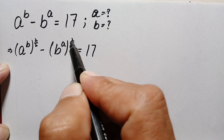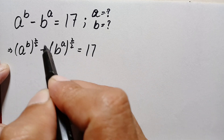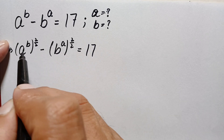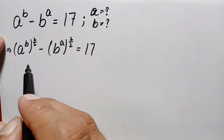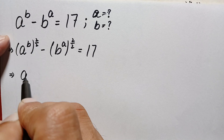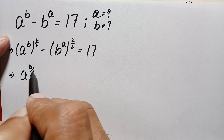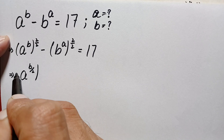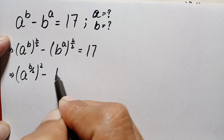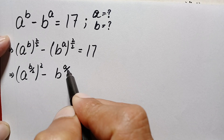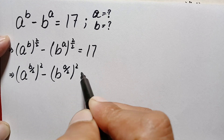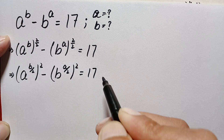By cancelling the 2 with 2 in both terms, we get a^b minus b^a. Further, we can rewrite this as (a^(b/2))² minus (b^(a/2))² equals 17.